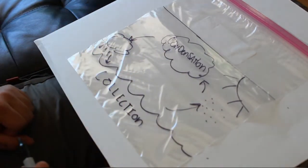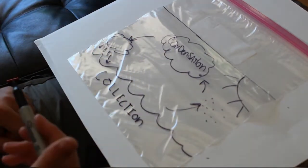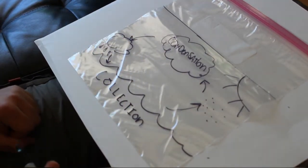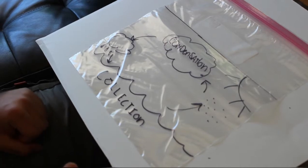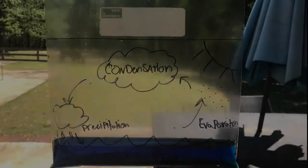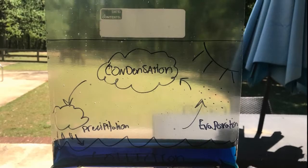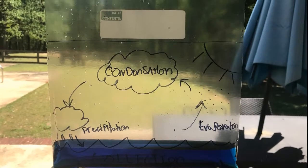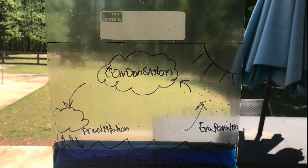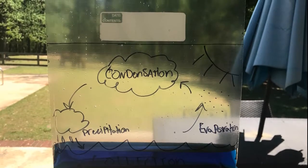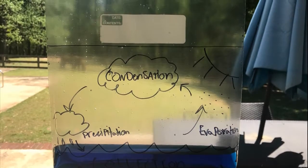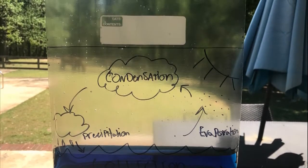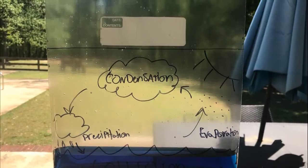Once you have drawn this, you are done drawing your baggie and the water cycle. This is what your bag should look like, although this is your project so you can be as creative as you want.